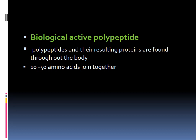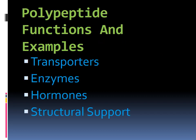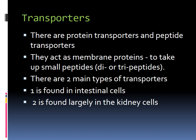Now we will discuss biologically active polypeptides. As initially mentioned, they contain 10 to 50 or more amino acids. Examples are transporters, enzymes, hormones, and structural support molecules. Transporters are proteins or peptides — as their name indicates, they are involved in transportation. There are two main types: intestinal cell transporters and kidney cell transporters, and their main function is transportation of different compounds from one side to another.